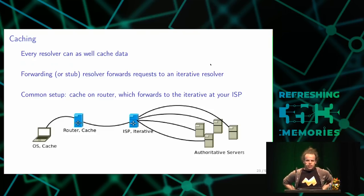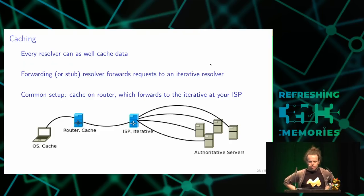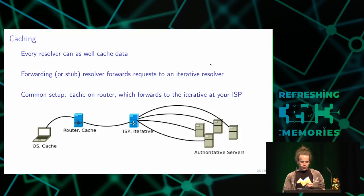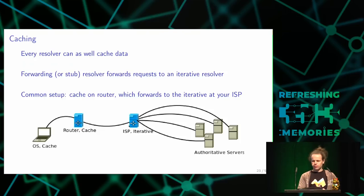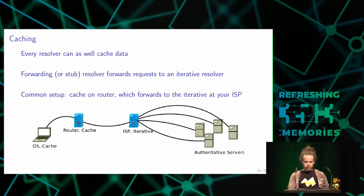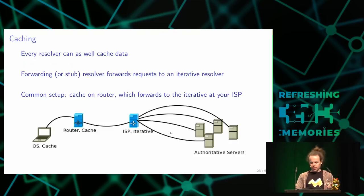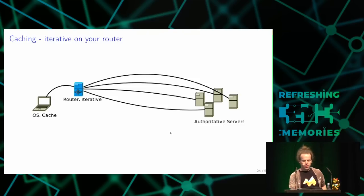Since there's a time-to-live for every resource record set, every resolver can cache all the data and records and reuse cached data for new replies. A typical setup has a laptop querying a forwarding resolver on a router, which queries another resolver run by the ISP, which then asks the authoritative name servers. Alternatively, your router itself can do iterative queries directly.